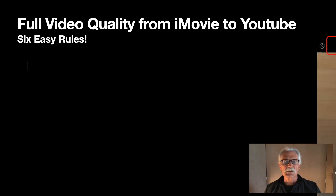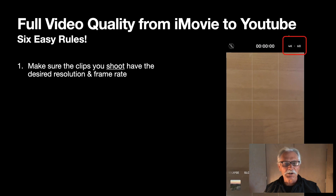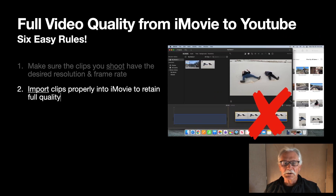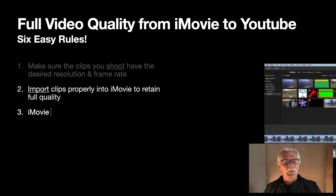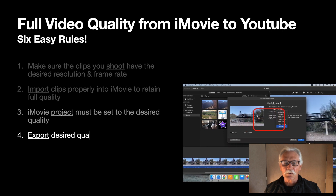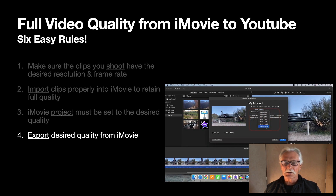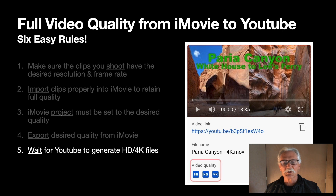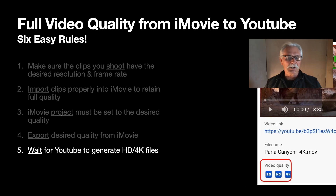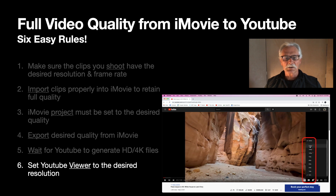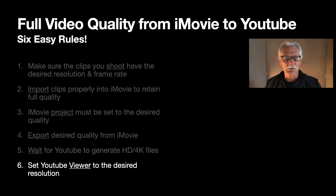Here's a quick summary of the six things you have to do to get full resolution out of YouTube. First, make sure the clips you shoot have the desired resolution and frame rate. Second, import the clips properly into iMovie to retain full quality. Third, the iMovie project has to be set to the desired quality. Number four, export your desired quality of the video from iMovie. Number five, wait patiently for YouTube to generate your HD or 4K files after it does the SD generation. Last, set your YouTube viewer to the desired resolution — otherwise you'll have a high resolution video on YouTube but you just won't see it when you play it back.